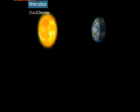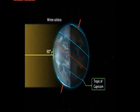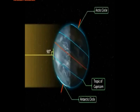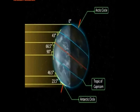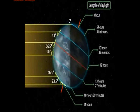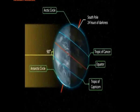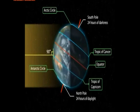Winter Solstice: On the 21st and 22nd of December, the overhead sun is over the Tropic of Capricorn, which receives the largest amount of solar radiation. On this day, the northern hemisphere is in the winter solstice while the southern hemisphere is in the summer solstice. The angle of the sun decreases towards the poles. The length of daytime in the northern hemisphere is the shortest in the year, while that of the southern hemisphere is the longest. There are 24 hours of darkness at the Arctic Circle and 24 hours of daylight at the Antarctic Circle.